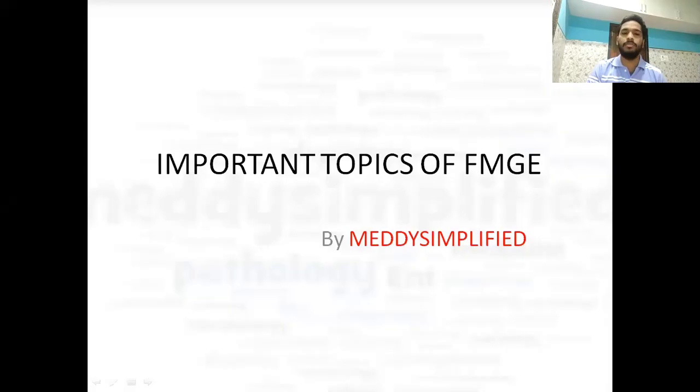Hello everyone and welcome to MediSimplified. In this video we are going to discuss once again the important topics for FMG from the four important subjects: ENT, Ophthalmology, Forensic Medicine, and Pediatrics. These four subjects consist of 10 to 15 marks range and if you do them well you can score the whole marks from these subjects. Being clinical, you can still score all the marks. So let's begin.